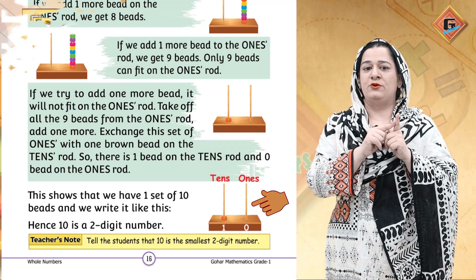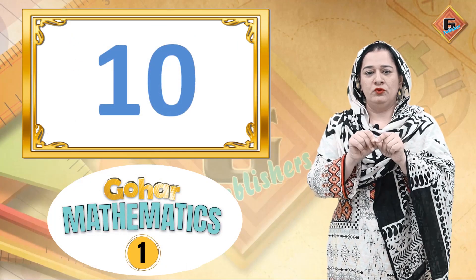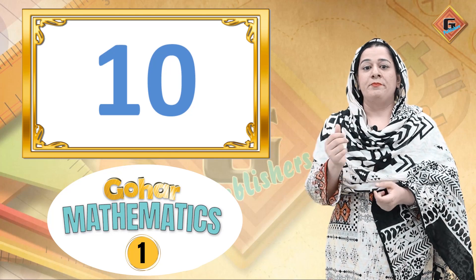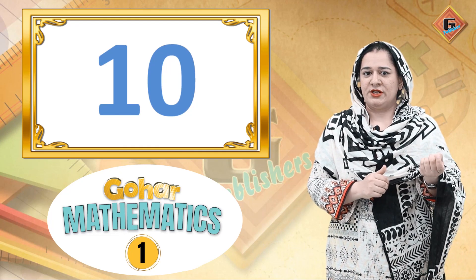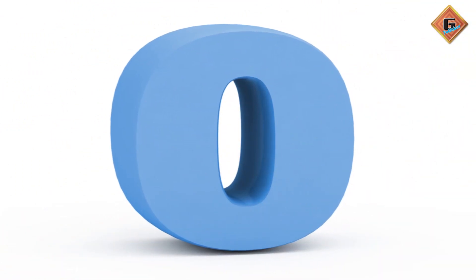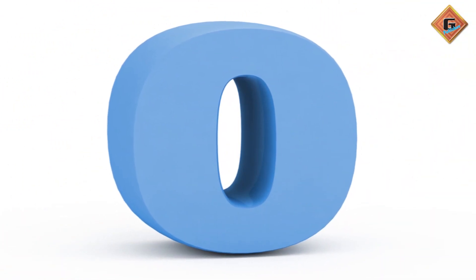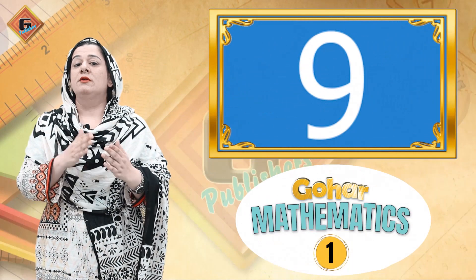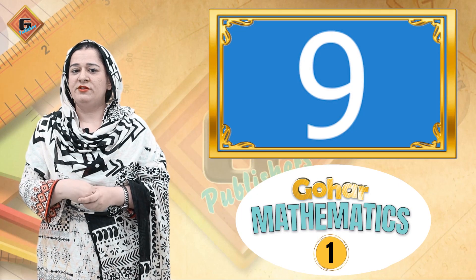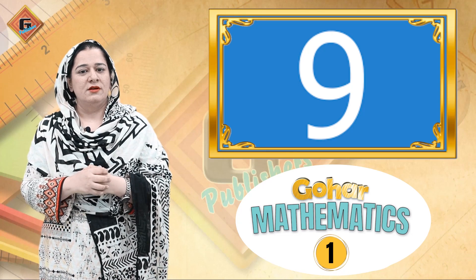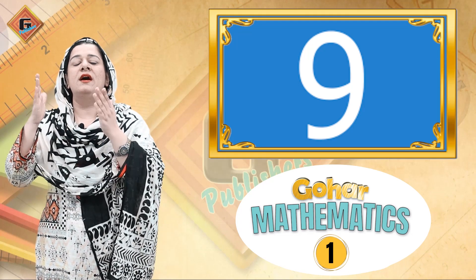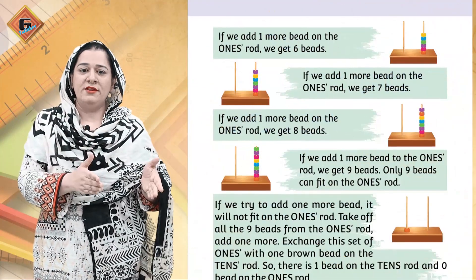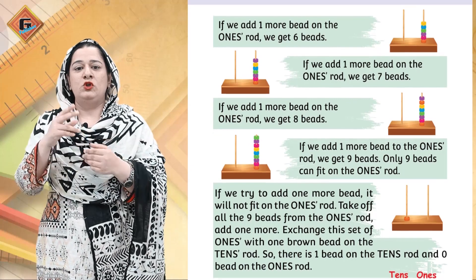One and zero — jab aapka ikattha hota hai to ye aapka ten ban jaata hai. And ten is the smallest two-digit number. Ab aapne ek digit use nahi kiya — aapne two digits, one and zero, use karke jo number banaya hai usko hum two-digit number kehte hain. One-digit number mein sab se pehle hum start karte hain zero se — zero is the smallest one-digit number. Aur biggest one-digit number kaun sa hai? Can you guess? Very good — nine! Nine is the biggest or greatest one-digit number.